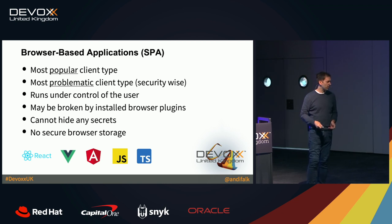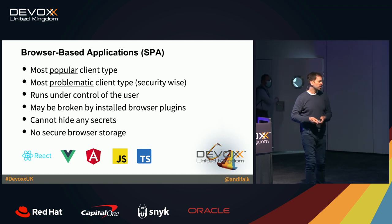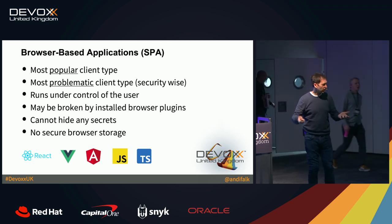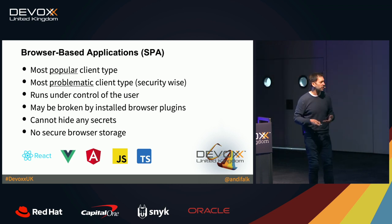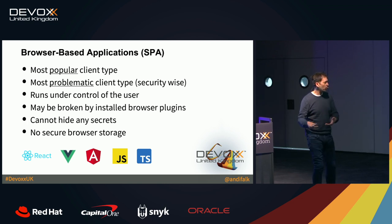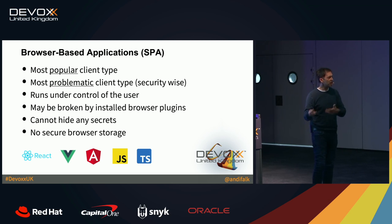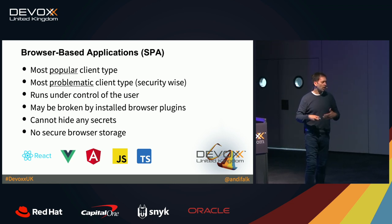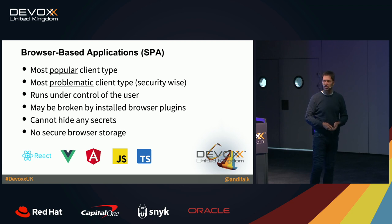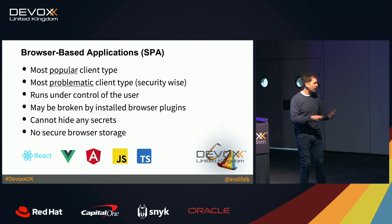Please apologize if I don't know the latest and greatest in all single-page application frameworks, but at least security-wise I'm very deep into all that. Every day you have a new framework coming up in the JavaScript world — that's much more stable in the back-end world; you don't get a new Java version each day. Single-page applications are the most popular client type, but at the same time also the most problematic client type security-wise, because it runs completely under the control of your web browser. As a developer or operations team, you don't have any control over the browser running on your customer's machine.